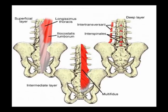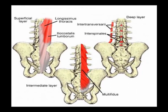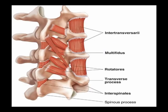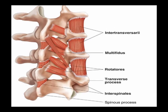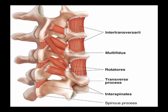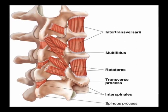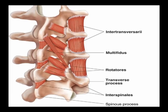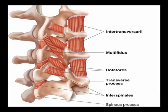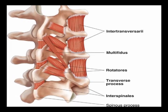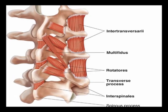The multifidi muscles are located in the intermediate layer of spinal muscles. Their actions include proprioceptive feedback and input due to the high muscle spindle density. When contracted bilaterally, they perform extension of the spine. When contracted ipsilaterally, they perform ipsilateral lateral flexion and contralateral rotation of the spine.